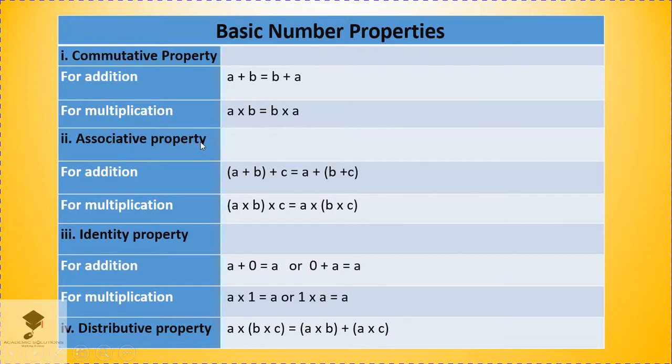And then we have the second one, which is associative property. When we are doing addition on associative property, A plus B in bracket plus C is the same as A plus open bracket B plus C. And then when we do multiplication, A times B inside a bracket multiplied by C is the same as A multiplied by open bracket B times C. We also have identity property and we also have distributive property.